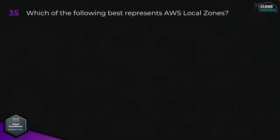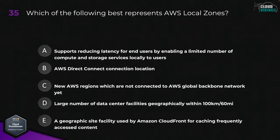Question thirty-five: which of the following best represents AWS Local Zones? Options are: A, they support reducing latency for end users by enabling a limited number of compute and storage services locally to users; B, AWS Direct Connect connection location; C, new AWS regions which are not connected to the AWS global backbone network yet; D, large number of data center facilities geographically within a 100-kilometer or 60-mile radius; or E, a geographic site used by Amazon CloudFront for caching frequently accessed content. The correct answer is A.